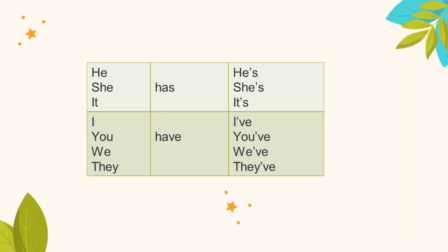Now let us look at how to conjugate the verb 'to have': he has, she has, it has. Or we can use the contraction form: he's, she's, it's. We have: I have, you have, we have, they have. Or we can use the contraction form: I've, you've, we've, and they've.